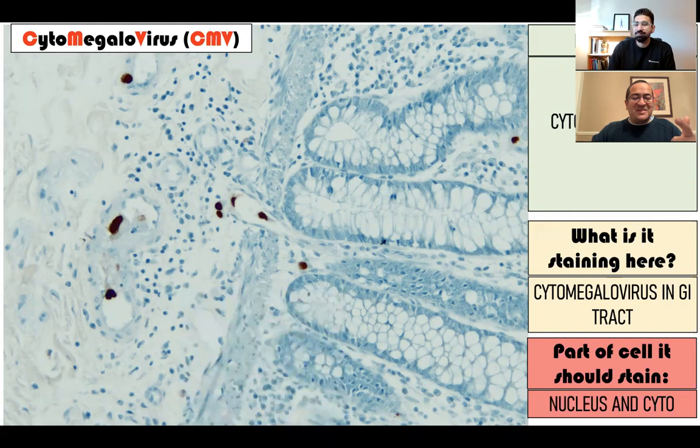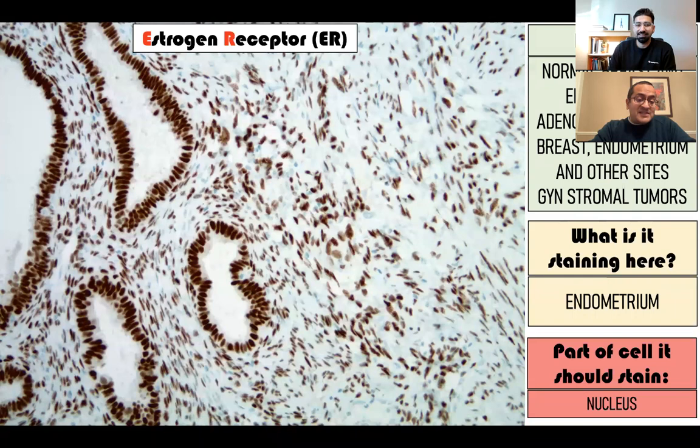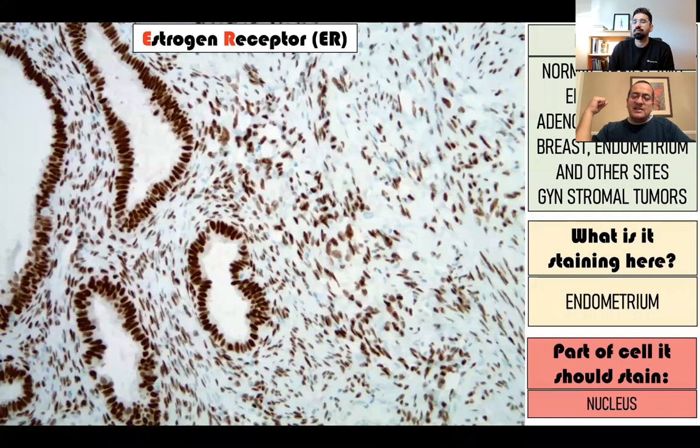Let's go to estrogen receptors. In breast cancers and endometrial cancers, estrogen receptors are in the nucleus. So ER staining is a nuclear marker. It stains all things that normally express estrogen receptors - normal breast, normal endometrium, cancers of the breast and endometrium, and other stromal sarcomas that can arise from these sites. Also very logical.